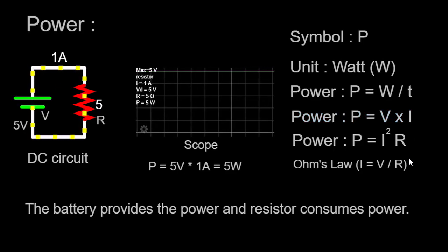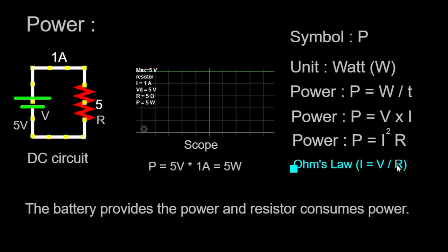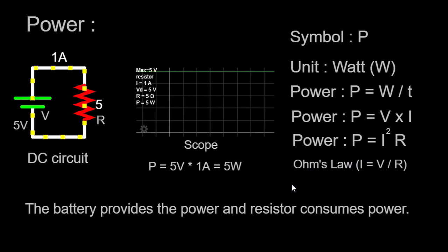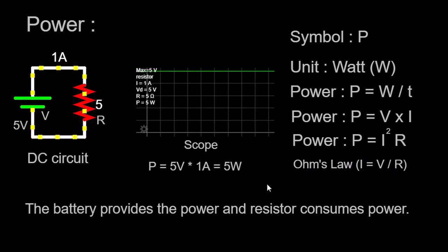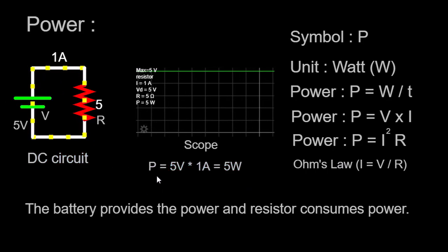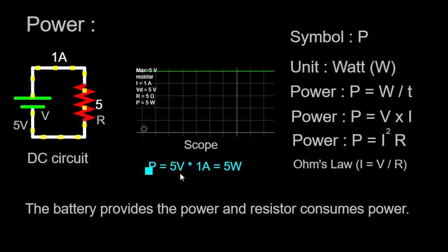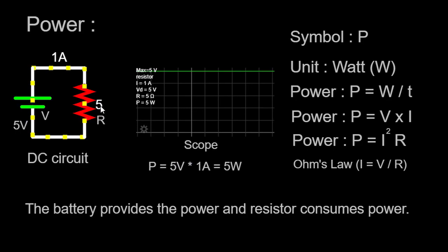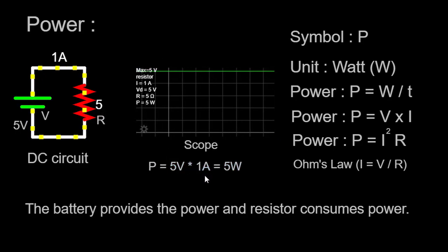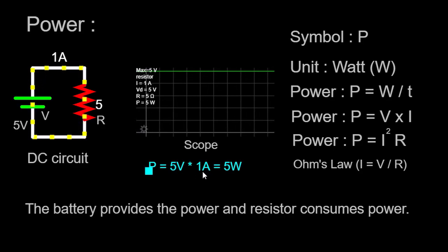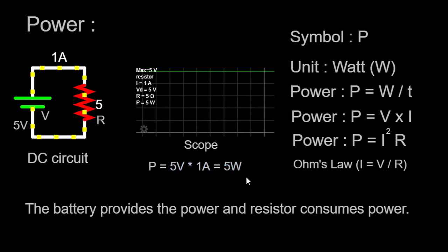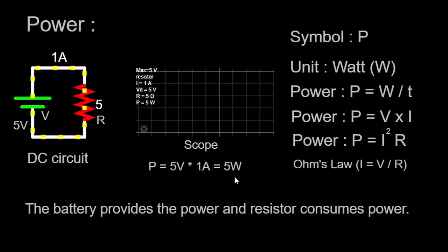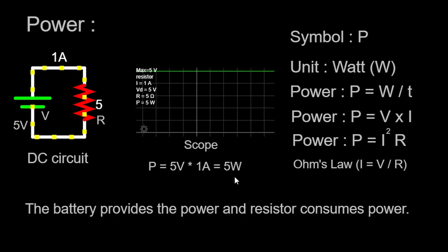By substituting the value of current into the power formula, we can calculate the power dissipated by the resistor. Given that our voltage source provides 5 volts and the resistance is 5 ohms, we use Ohm's law to find the current: I = 5V / 5Ω = 1 ampere (A). Next, we substitute into the power formula: P = 5V × 1A = 5W. Therefore, our 5-ohm resistor dissipates 5 watts of power. This means that for every second, 5 joules of electrical energy are being converted or dissipated as heat in the resistor.